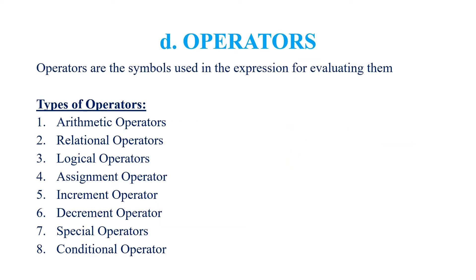Under tokens, the next type is operators. Operators are nothing but symbols used in expressions. We will see the detailed content of operators in the next coming slides. The types of operators are arithmetic operators, relational operators, logical operators, assignment operator, increment operator, decrement operator, special operators and conditional operator.